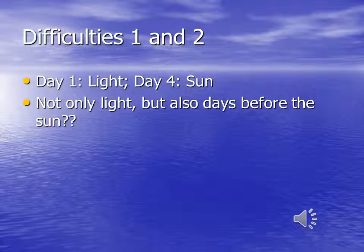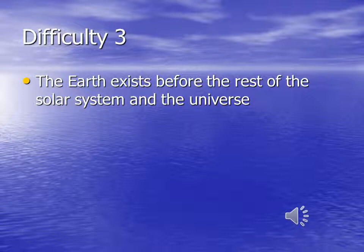In 1 verse 1, the earth is already there, created together with the heavens, but the rest of the solar system and the universe are not created until the fourth day. Now, this did not startle anyone in the ancient world, which had no concept of a solar system or galaxy, but is certainly not how modern day astronomers think about the universe.